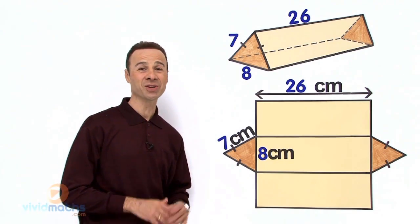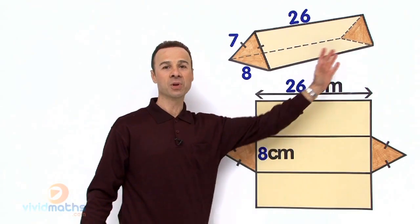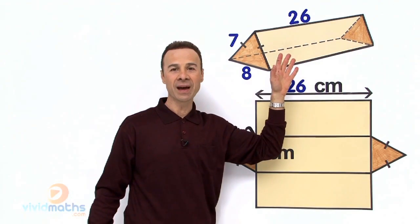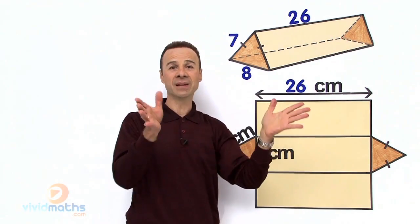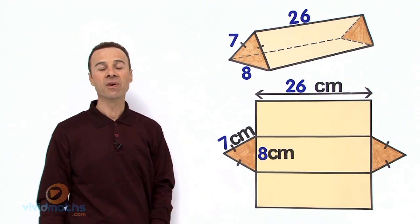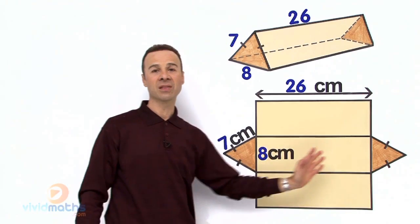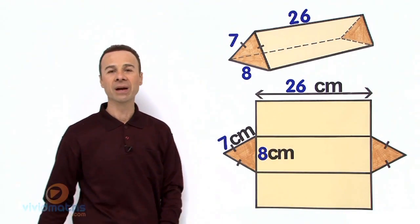We are looking for the total entire surface area of this particular triangular prism. Here it is in 3D, and if we got a bulldozer and flattened it out and opened it up, we get something like this. Notice that we have five sides: the two triangles, the front face and the back face, and then the three panels that envelop and wrap around it.